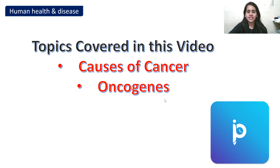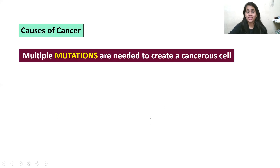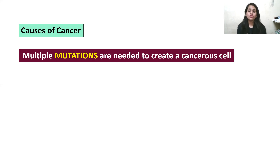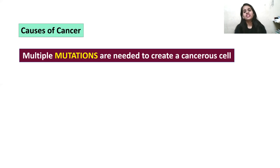In the initial video I told you that a normal cell changes into a cancerous cell. Now we'll understand what happens to our normal cell that changes it into a cancerous cell. Any cell, unless and until it undergoes certain changes — called mutations — has to undergo multiple mutations before it will change into a cancerous cell.